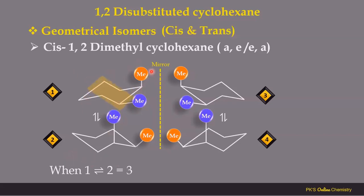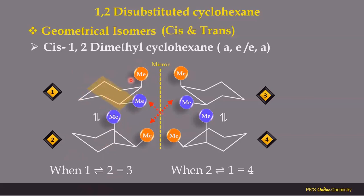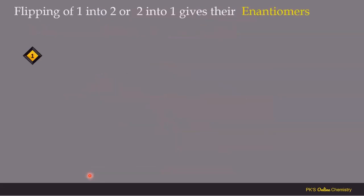When we flip conformation number 1, we get conformation number 2, where the axial valence becomes equatorial and the equatorial valence becomes axial. Flipping conformation 1 gives conformation 2, which is similar to conformation number 3. Flipping conformation 2 gives conformation 1, similar to conformation 4. Therefore, flipping conformation 1 or 2 converts them into their enantiomers.